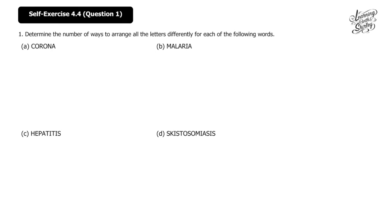Let's solve self-exercise 4.4 question 1: determine the number of ways to arrange all the letters differently for each word. For part (a), 'corona': there are 6 letters, and there are 2 O's repeated. So the number of ways is 6 factorial over 2 factorial, which equals 360 ways.